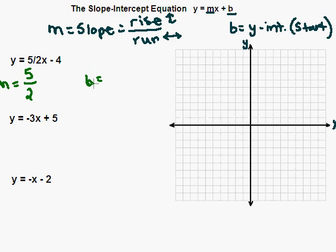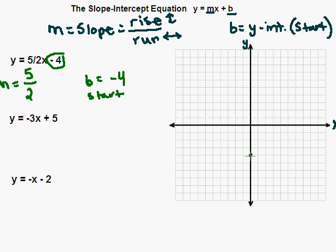Our b value is the number on the end being added or subtracted. In this case, we're subtracting 4, so our b value is negative 4. This is our starting point. We're going to start at negative 4, so I'm going to go to my y-axis and go down 1, 2, 3, 4 to negative 4. And there's my starting point — I'll go ahead and plot that.